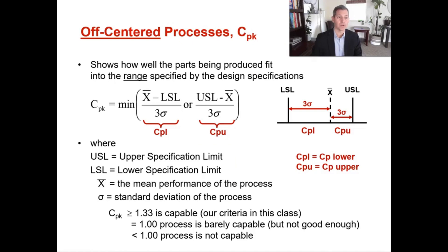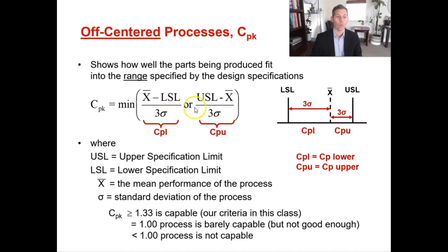Now let's calculate the off-center process capability, which is CPK. This shows how well the parts being produced fit into the range specified by the design specifications. The formula for CPK equals the minimum of either the lower specification limit calculation or the upper specification limit calculation. For the lower: (X-bar minus LSL) divided by (3 × sigma). For the upper: (USL minus X-bar) divided by (3 × sigma). Take the minimum of the two results.